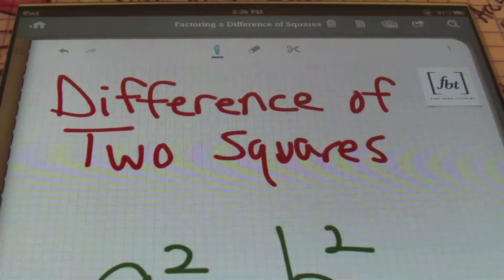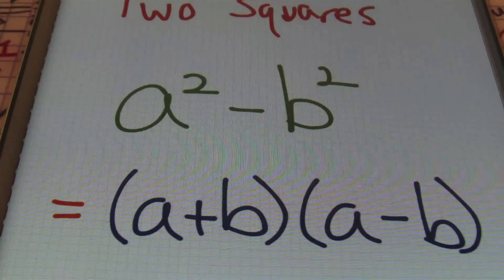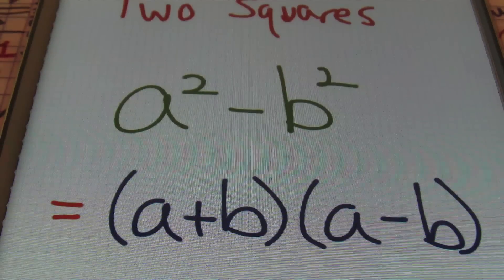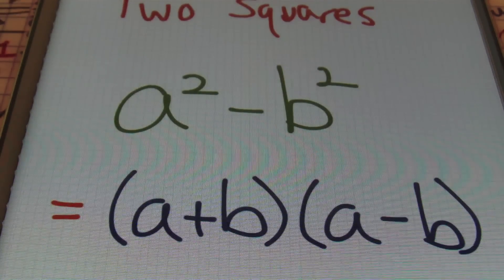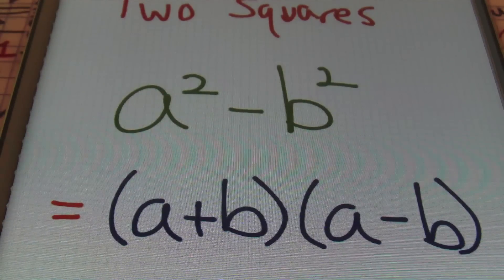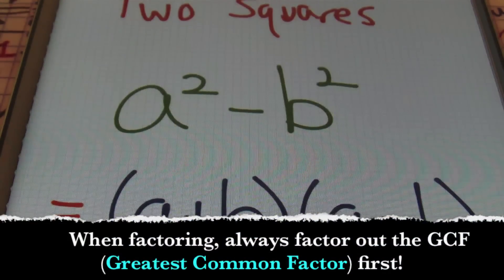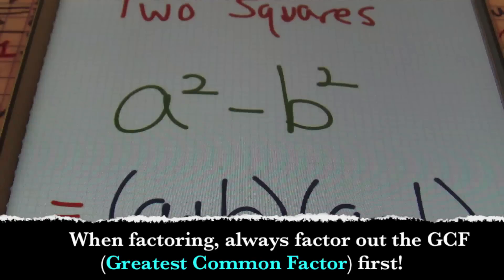All right, ladies and gentlemen, when factoring two squares, first of all, anytime they ask you to factor anything, there are two things you want to keep in mind. One: you will always factor out the GCF first, meaning the greatest common factor. So if you're dealing with an expression where all the terms have something in common, you want to factor that out first before you try to attempt any other factoring process, procedure, or steps.